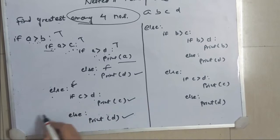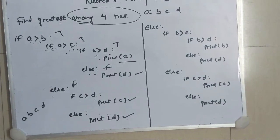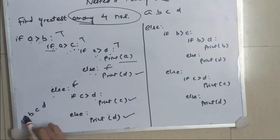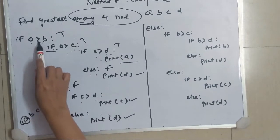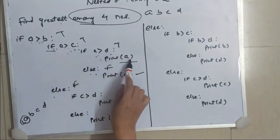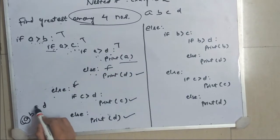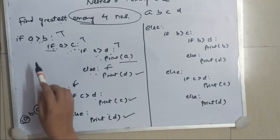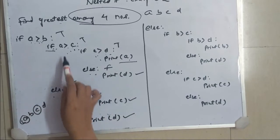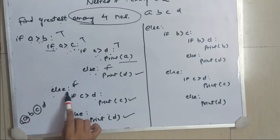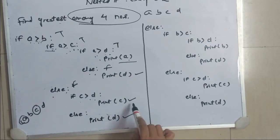So in this example, it will work for A, B, C, D. Suppose these are four numbers. If A is greatest, then it will follow this path and print A. If suppose C is greatest, so it will go in this way: A greater than B is true, A greater than C is not true, so it will come here and print C.